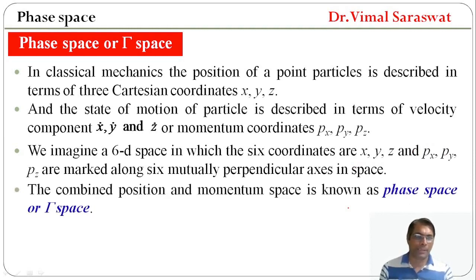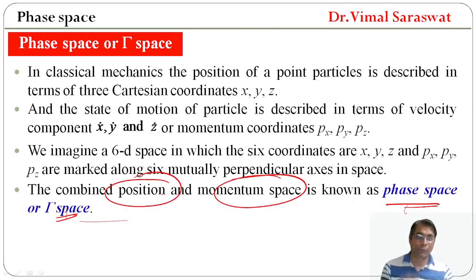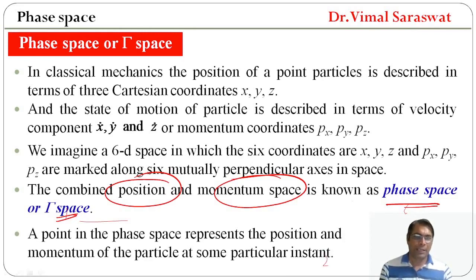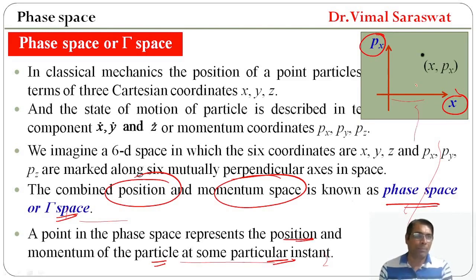The combined position and momentum space is known as phase space or gamma space. Three coordinates are from position space and the remaining three are from momentum space, giving a six-dimensional imaginary space. A point in phase space represents the position and momentum of the particle at a particular instant. Here we show a two-dimensional phase space: one dimension for position and one for momentum, with a point having coordinates (x, px).